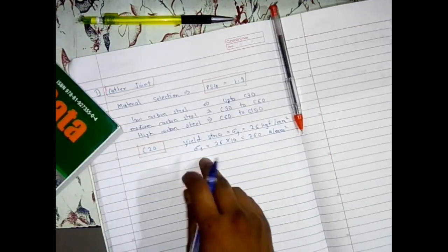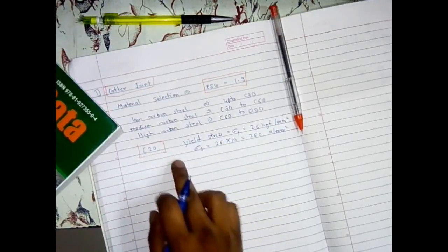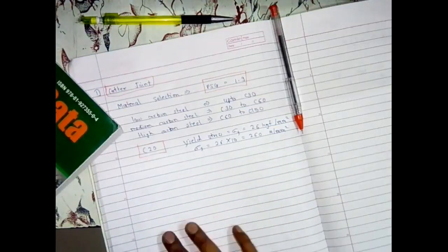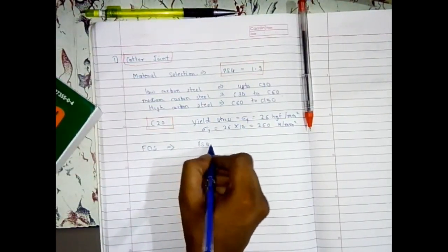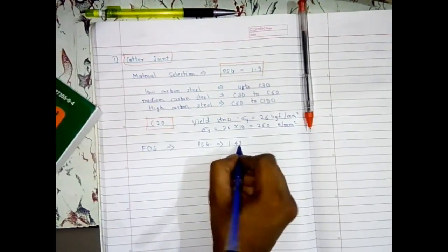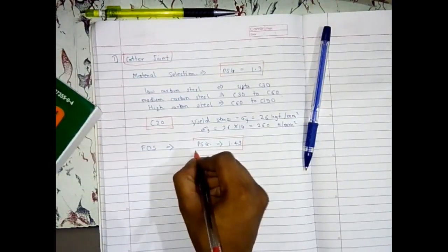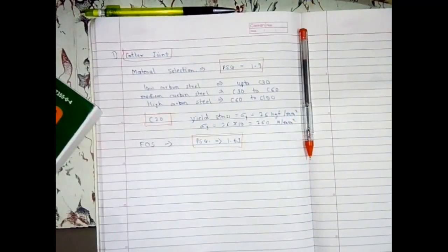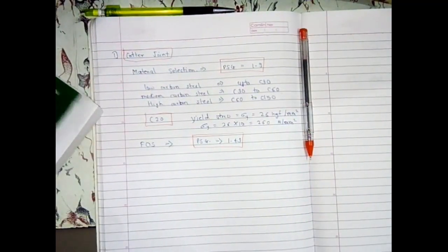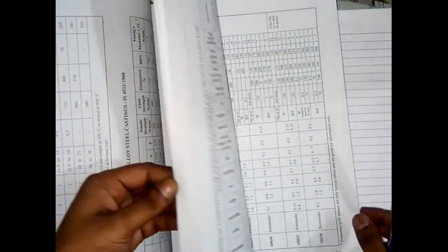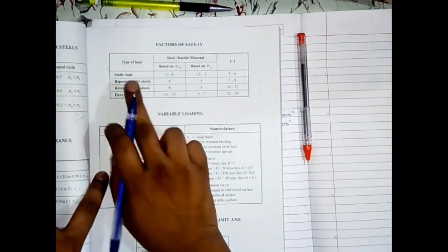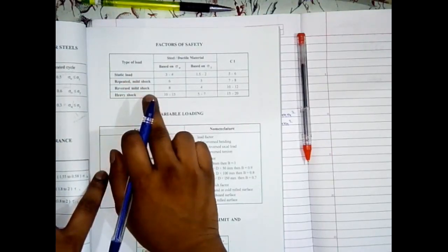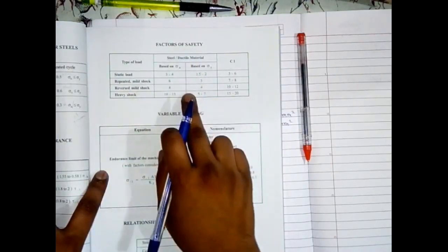Thus we found yield stress for C20. Now we will see how to find the factor of safety. For this we require PSG 1.43. In this page there are four types of loads: static load, repeated mild shock, reversed mild shock, and heavy shock. This table is for ductile materials.